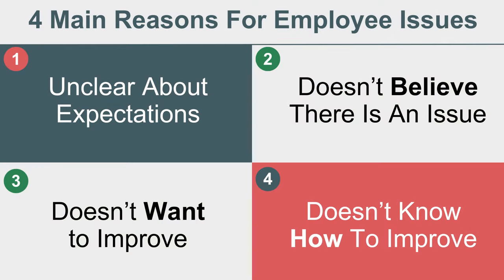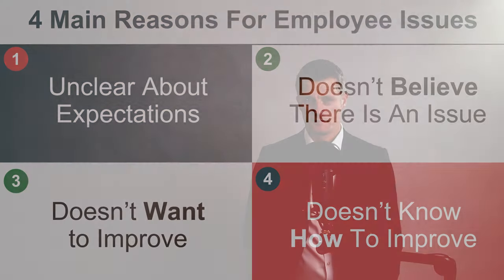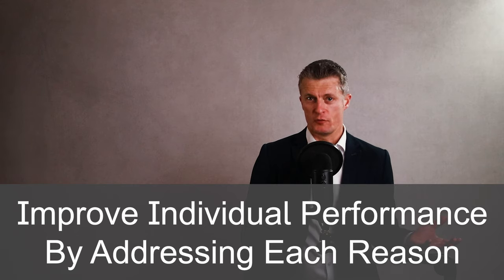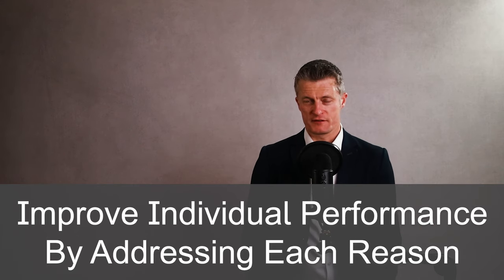From experience, the four main reasons team members significantly underperform are: firstly, they don't understand what is expected from them; secondly, they don't believe they are performing poorly; third, they don't want to do a good job and be a team player; and fourth, they don't have the skills to be better. Good management can, a lot of the time, quickly improve individual performance by addressing each of these reasons.